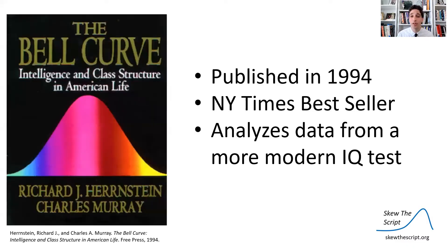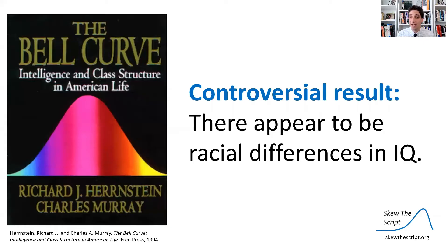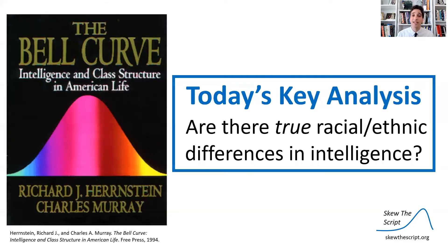One of the proponents of IQ tests were the authors of this book, The Bell Curve. It was published in 1994 and was a New York Times bestseller when it was released. It analyzes data from a more modern and, they claim, more valid IQ test, and they arrived at a controversial result: there appeared to be racial differences in IQ tests among tested Americans. So for today's key analysis, we're going to ask: are there true racial or ethnic differences in intelligence, or might there be something else going on?